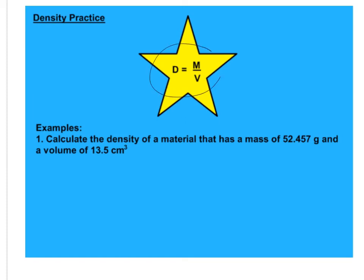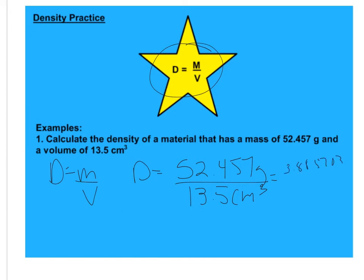Okay, this is your density equation. Density is mass divided by volume. So we want to calculate the density of a material that has a mass of 52.457 grams, and a volume of 13.5 centimeters cubed. So we're going to plug that into our density equation. So we don't know our density. That's what we're trying to find out. We know it has a mass of 52.457 grams. And we're going to divide it by our volume, 13.5 centimeters cubed. And our calculator says 3.88570370. Well, we're dividing, so we only need the least number of sig figs, which is this number. So our density is 3.89 grams per centimeter cubed. Don't forget your units.